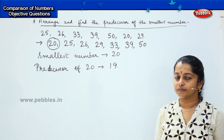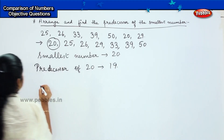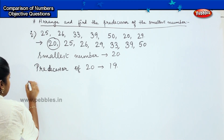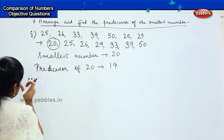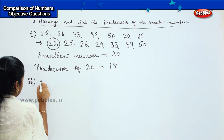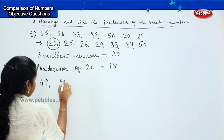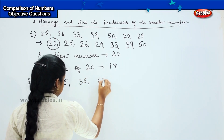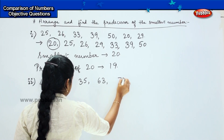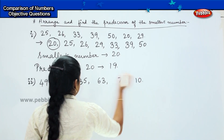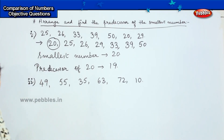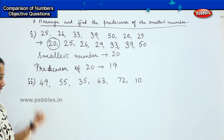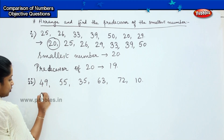Shall we do one more? Here is your second question. The numbers given in the slot are 49, 55, 35, 63, 72, and 10. Again, the first step is arranging from small to big — that is, arranging in ascending order. So it will be 10.